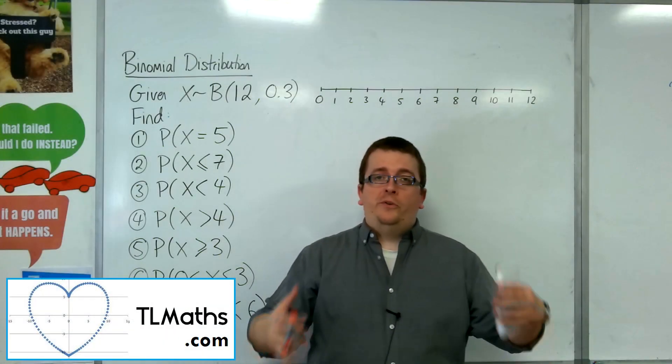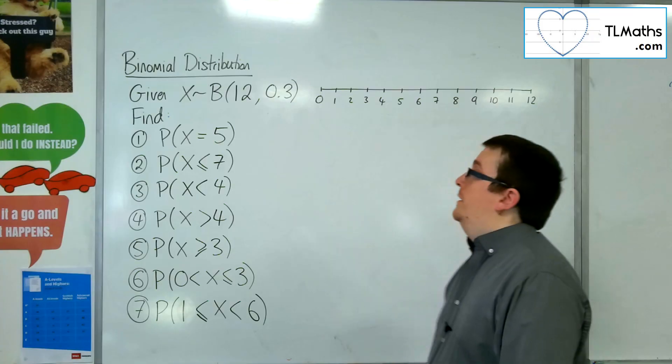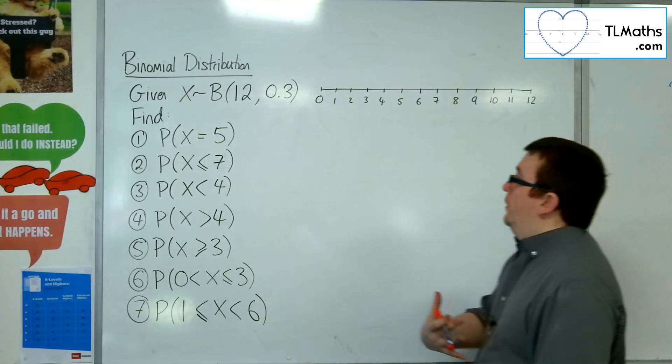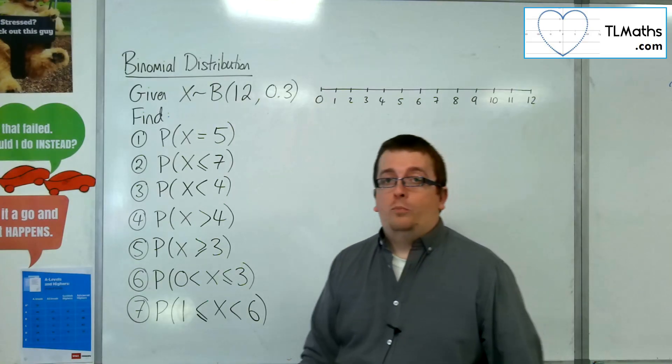Okay, so in this video what I want to do is go through finding probabilities using your calculator. So we're going to start off with a binomial distribution with n as 12 and probability of success being 0.3.